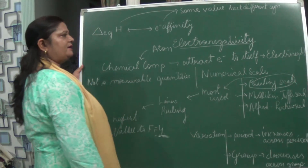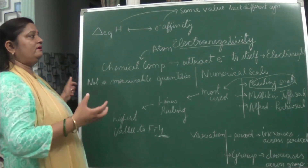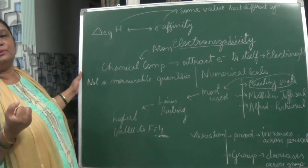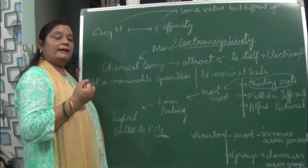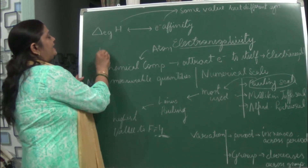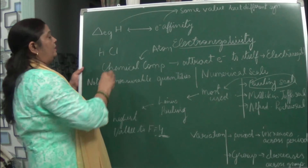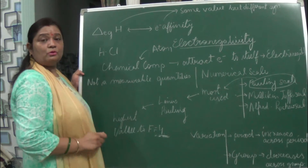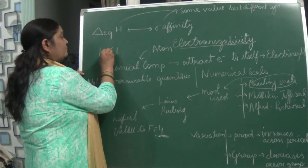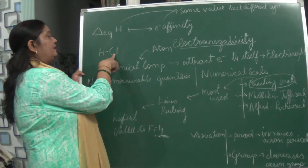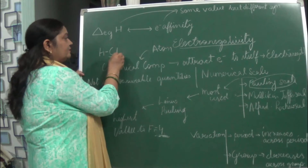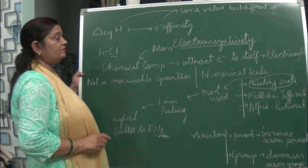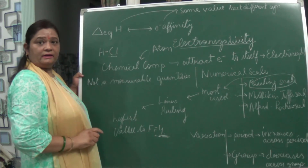Coming to electronegativity — the electronegativity of an atom in a chemical compound is its tendency to attract electrons towards itself. For example, in HCl, chlorine is more electronegative because it pulls the electron towards itself. As a result, chlorine acquires a partial negative charge due to polarity. Electronegativity also describes the polarity of a bond.